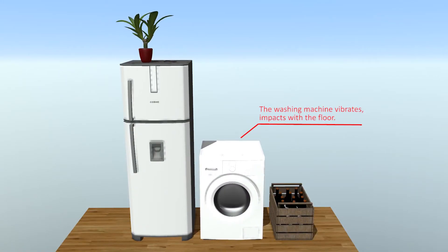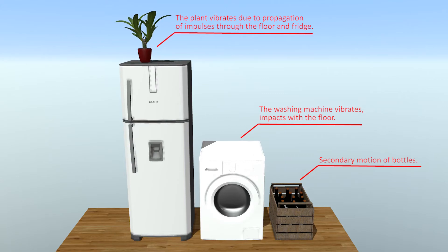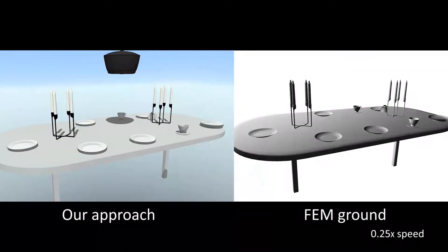This unbalanced washing machine is shaking, and the impacts with the floor produce vibrations that propagate through the fridge to the plant. Similarly, notice how the crate and the bottles inside are rattling.